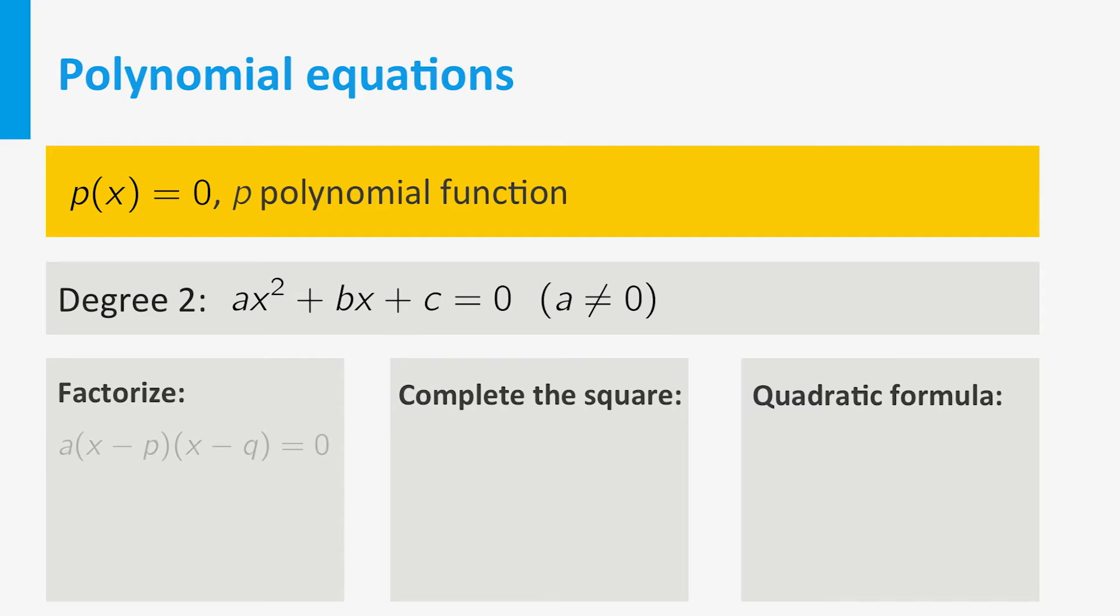In the first case, you try to write the equation as a times x minus p times x minus q equals zero. This is not always possible, but if it is, the solutions are simply x equals p or x equals q.